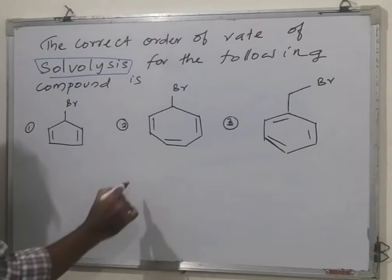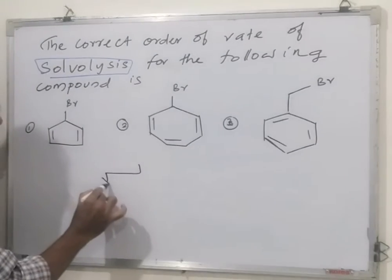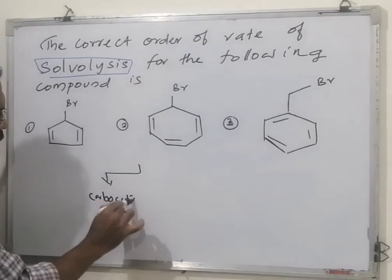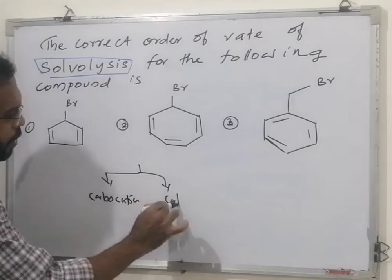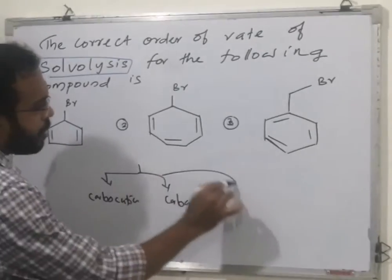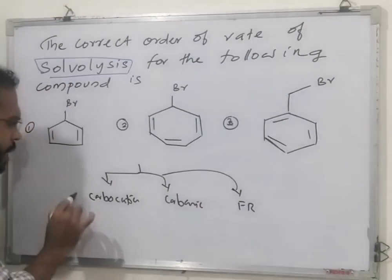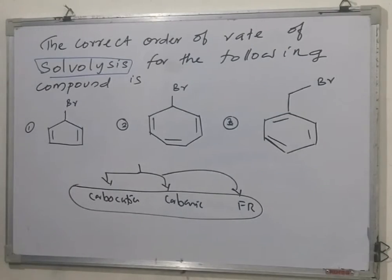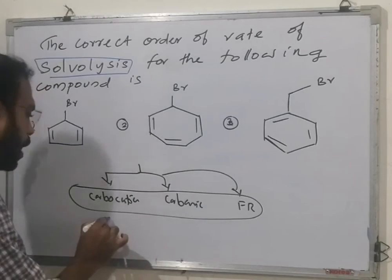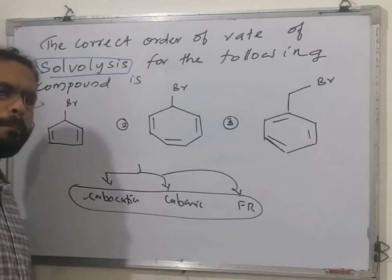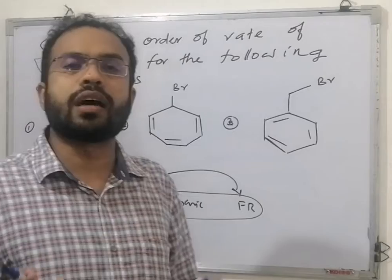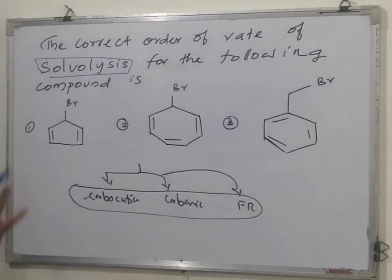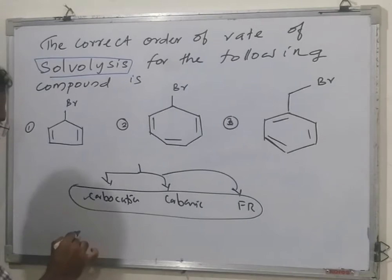In every reaction we have only three types of intermediates: carbocation, carbanion, and free radical. 99% of intermediates fall in this category, and of that 99%, about 90% are carbocations. The majority of our intermediates are carbocations.